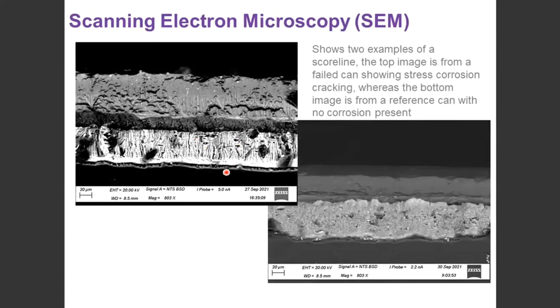And if we compare that against a can of a different batch, or the same batch, for example, that isn't showing the premature opening, we may see that it's not present. That fanning is absent, as shown in the bottom image here.